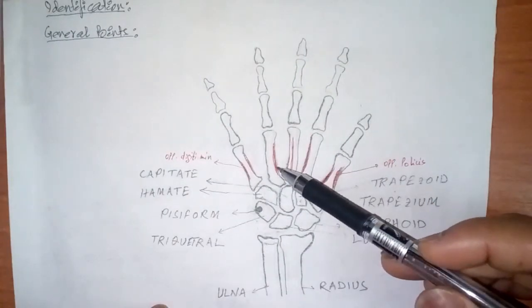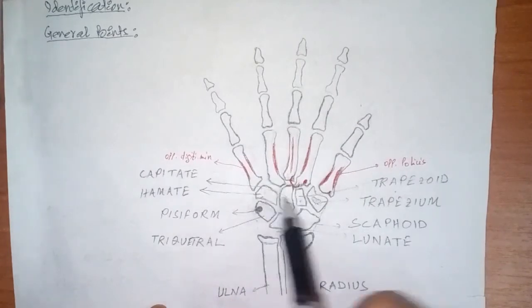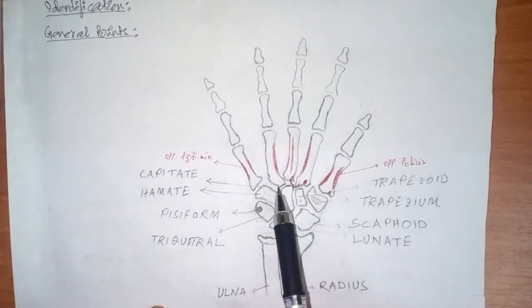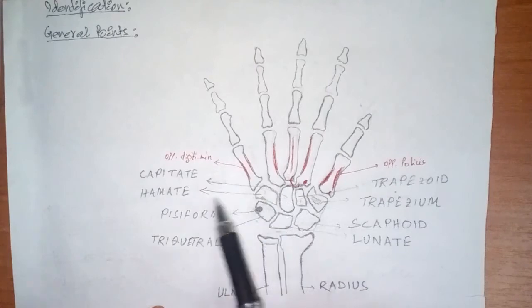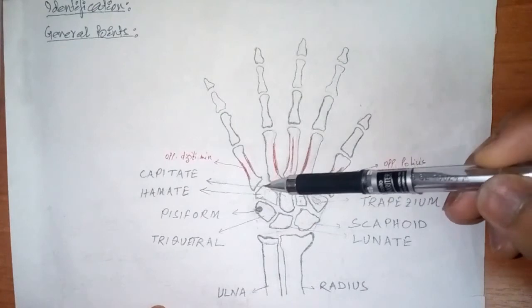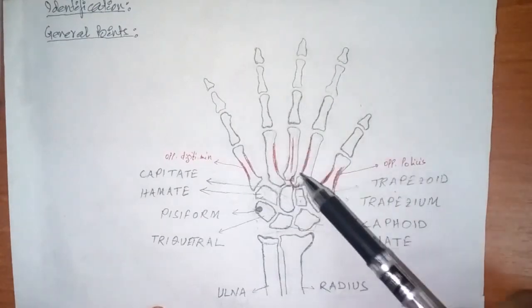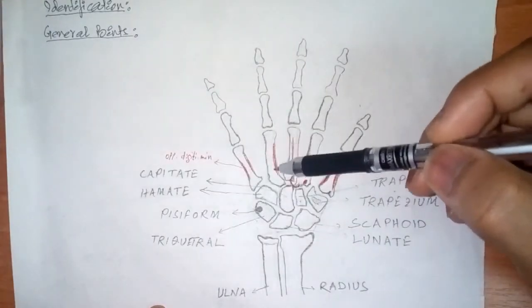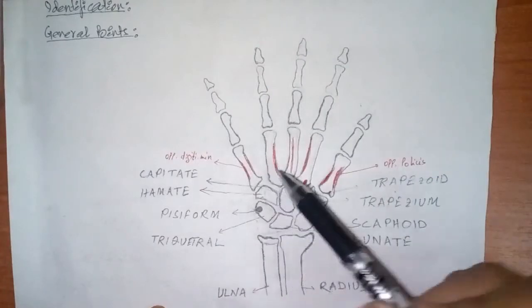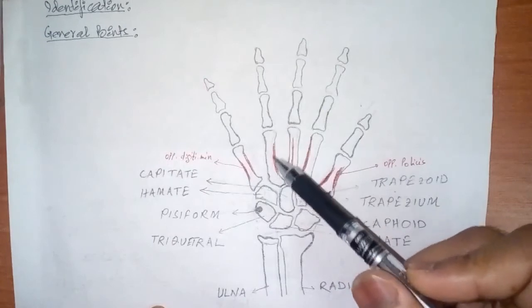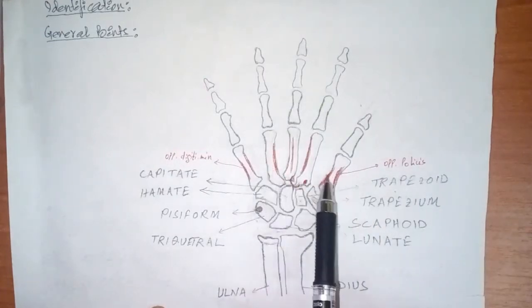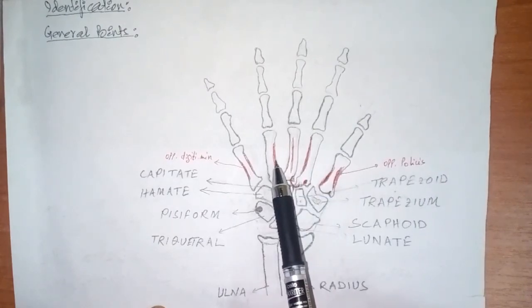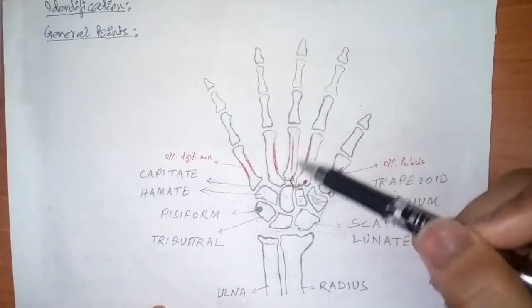As for the fourth metacarpal bone, it has two oval facets on its lateral side for articulation with the third metacarpal and with the capitate bone. It also has one elongated facet for articulation with the hamate bone. The fourth metacarpal bone articulates with four different bones: the third metacarpal, the capitate, the hamate, and the fifth metacarpal bone. As for muscle insertion, it has only one attachment — the third palmar interosseous muscle.